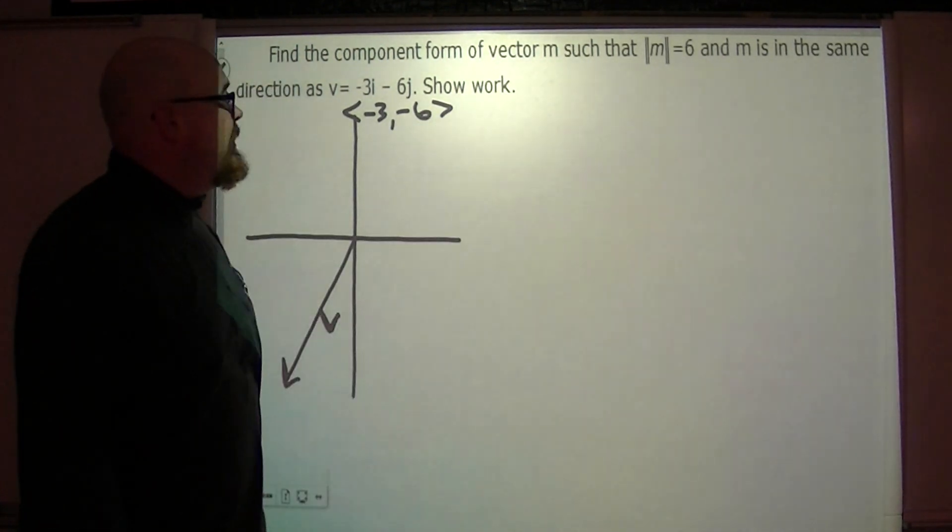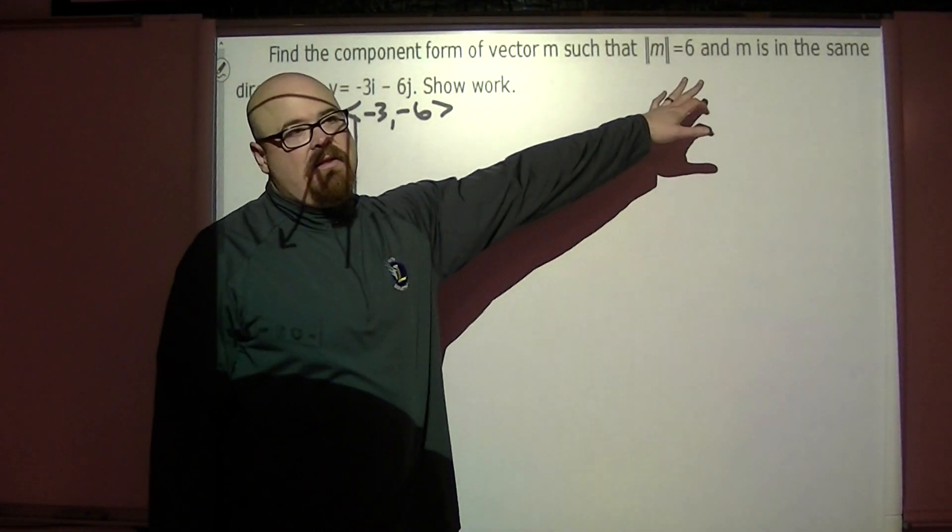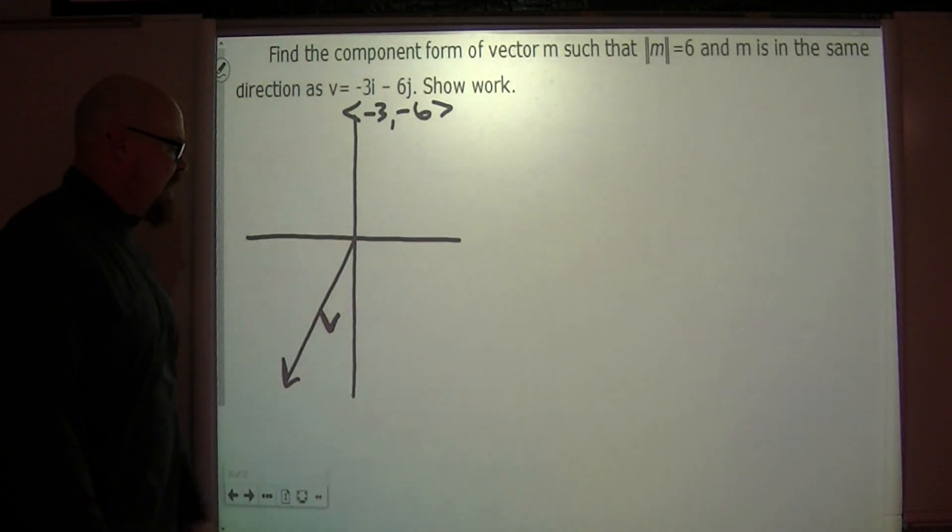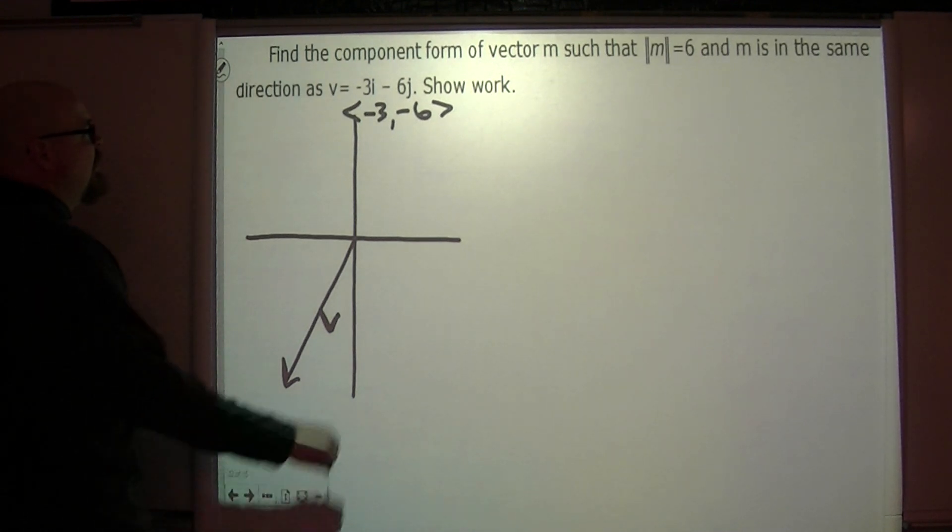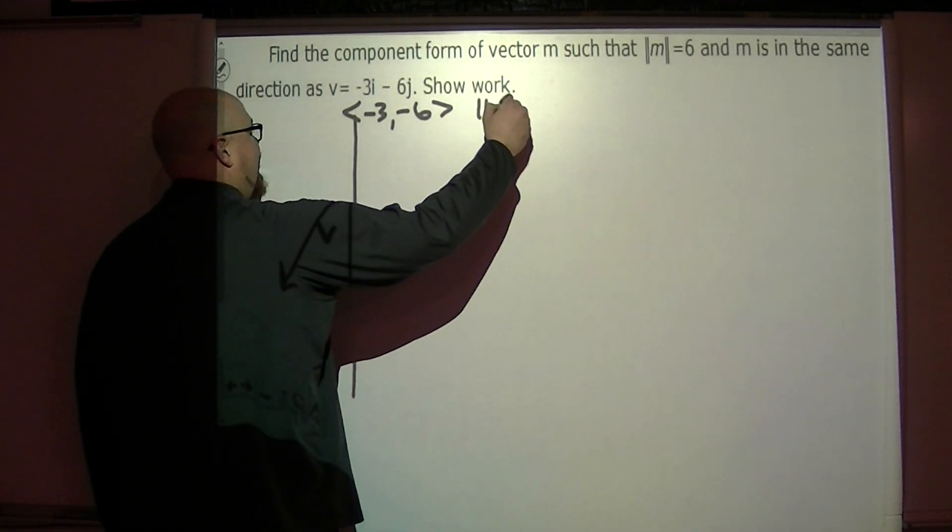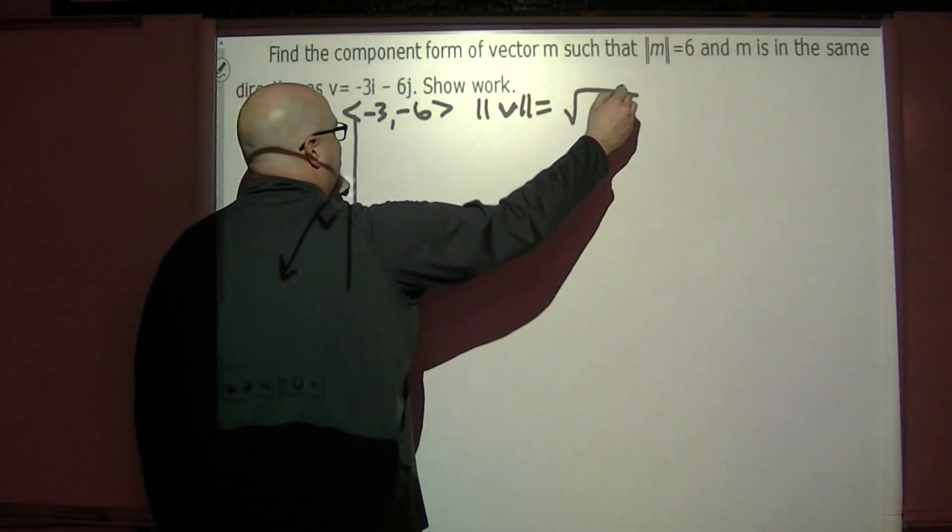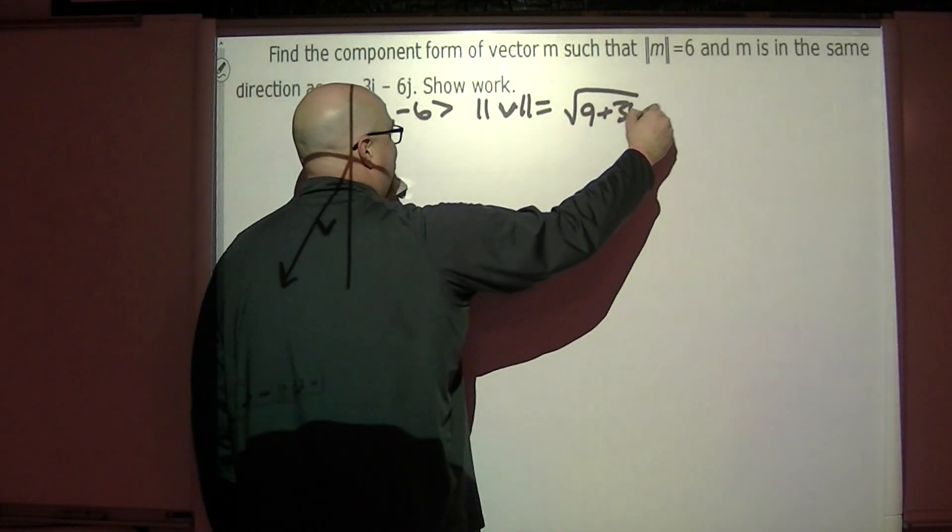What they want is a different vector which we're calling vector m that has a magnitude of 6 and is headed in this same direction. So not to blow through this too quick, but the magnitude of vector v is the square root of 9 plus 36.